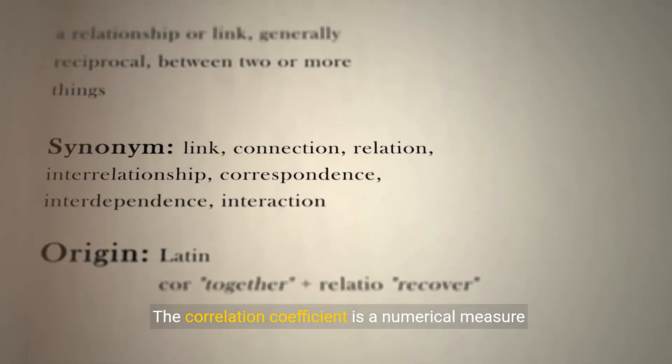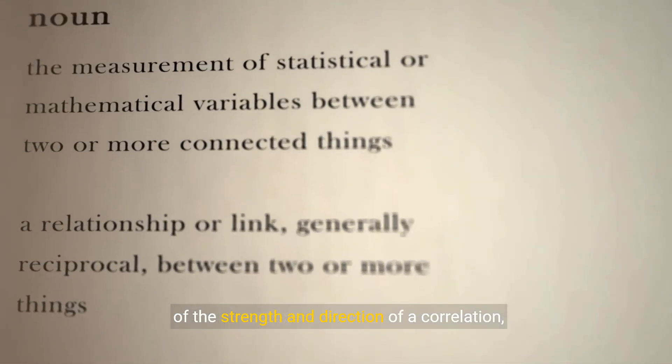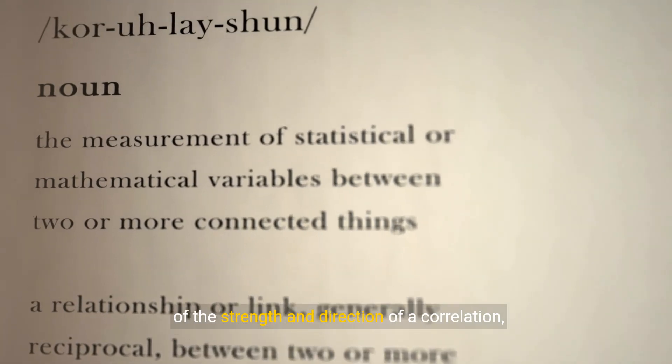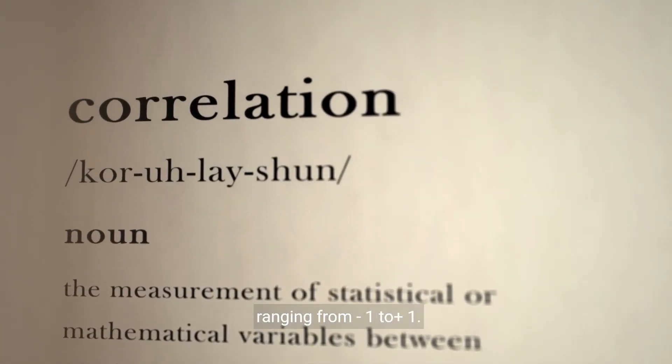The correlation coefficient is a numerical measure of the strength and direction of a correlation, ranging from -1 to +1. Scatterplots are graphical representations of the relationship between two variables.